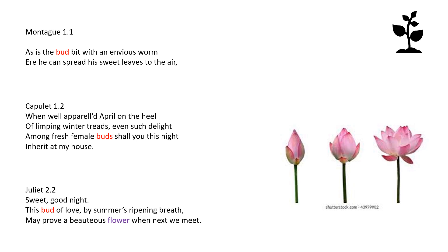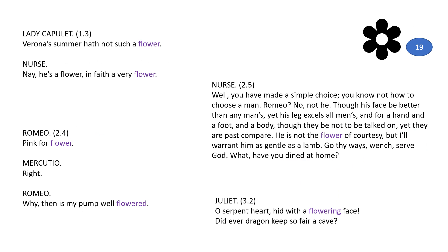Then in Act 2 we see Juliet using the phrase 'the bud of love by summer's ripening breath may prove a bounteous flower when we next meet,' showing a development from bud to flower. From biology, we know that when a flower blooms it is part of sexual reproduction, so when we talk about buds we're talking about sexuality and readiness. This contrasts with later, when Capulet is happy for Juliet to marry — at this point he's saying she's not quite ready.